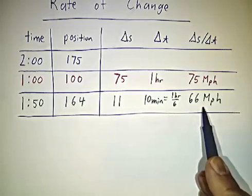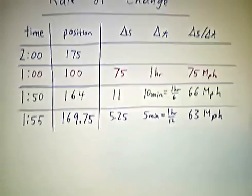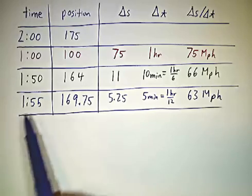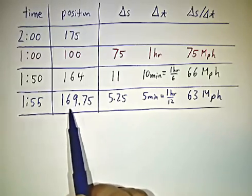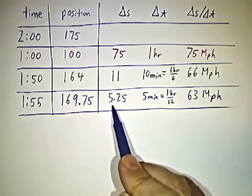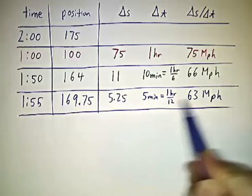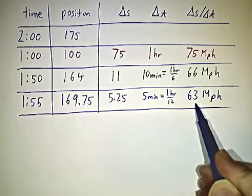And now you're feeling a little bit better because the speed limit's 65. Then your friend tells you that at 1:55 we were at mile marker 169 and three quarters. So we've gone 5 and a quarter miles in the last five minutes, and that works out to an average of 63 miles an hour.